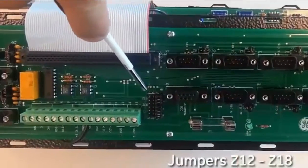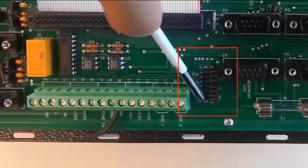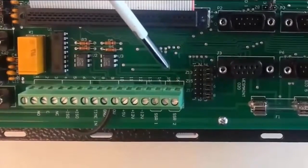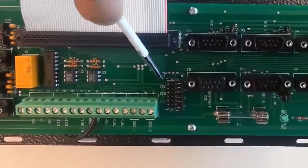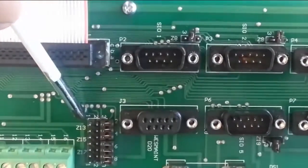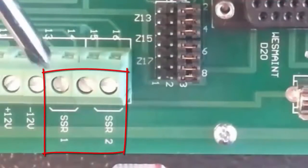Bank of jumpers Z12 to Z18 in this area control the keying of an external radio via the two available connectors, which are SSR1 and SSR2. So we have the option of either using SSR1 or SSR2 to key a radio modem.